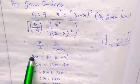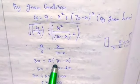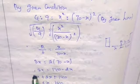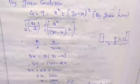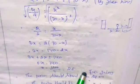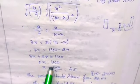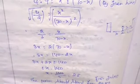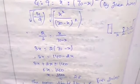Using cross multiplication: 3x equals 2 into (70 minus x), which gives 3x equals 140 minus 2x. Then 3x plus 2x equals 140, so 5x equals 140, and x equals 28.